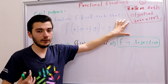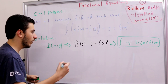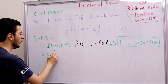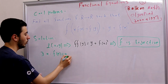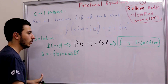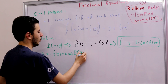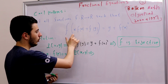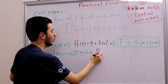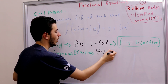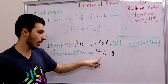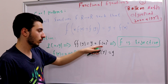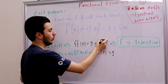Since f is surjective, there exists some alpha such that f(alpha) = 0. Substituting x with alpha — P(alpha, y) — the equation becomes f(f(y)) = y, and the f(x)² term vanishes. So we have the beautiful relation f(f(y)) = y. Comparing with the earlier relation, we also get f(0) = 0.